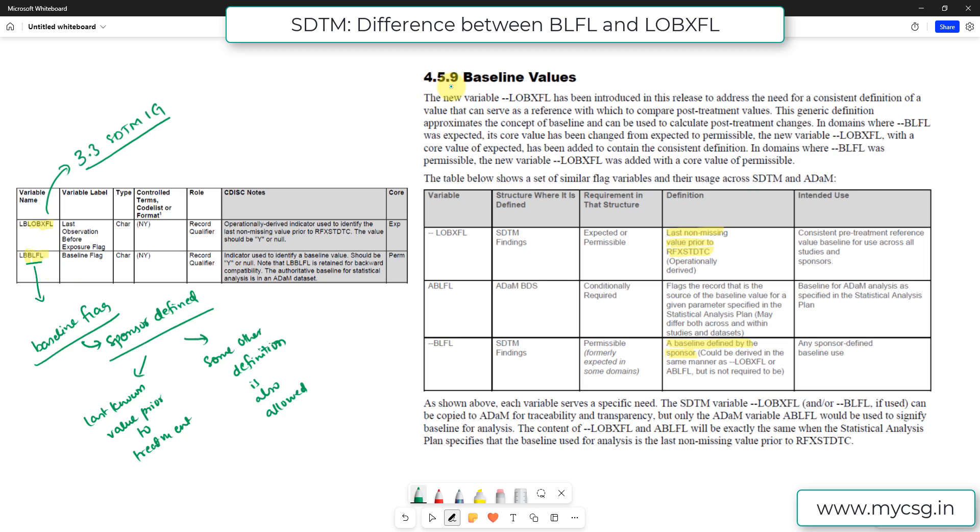So this is still allowed as per the definition of your BLFL, because if you clearly see in section 4.9, which is titled as baseline values of SDTM IG 3.3, it says a baseline defined by the sponsor. So the variable that is used to identify the baseline record as per the definition chosen by the sponsor. So here it is more generic.